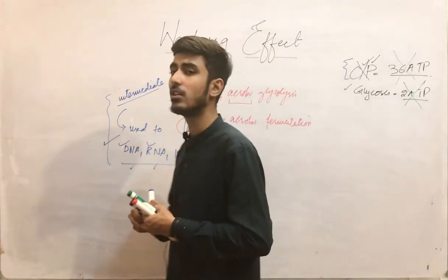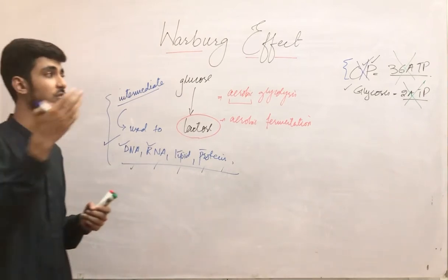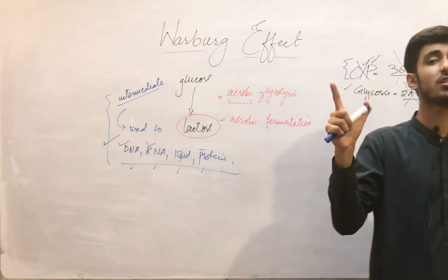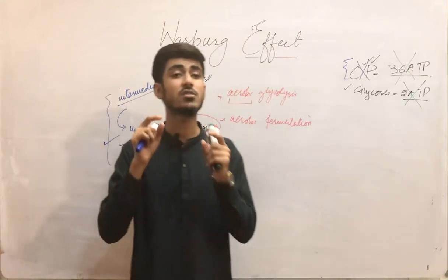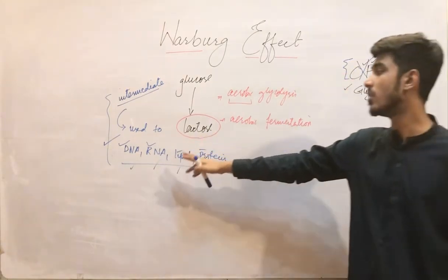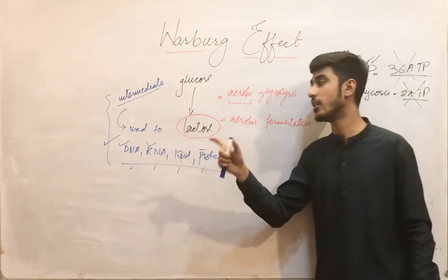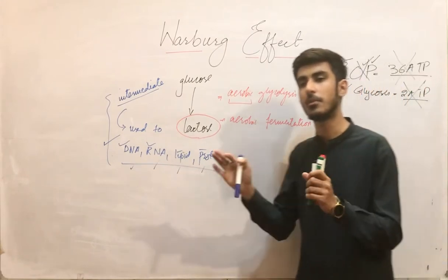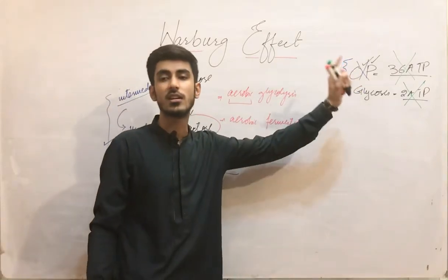In rapidly growing cells, mitochondria also changes its role. The normal function of mitochondria is to carry out oxidative phosphorylation and produce ATP. But in rapidly growing cells, mitochondria's main function is not to produce ATP. Instead, mitochondria carries out certain reactions that produce intermediates required for the formation and synthesis of cellular components. So mitochondria also helps in this process in rapidly growing cells, while in normal cells it produces 36 ATPs via oxidative phosphorylation.